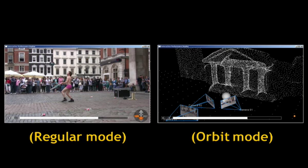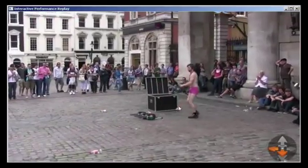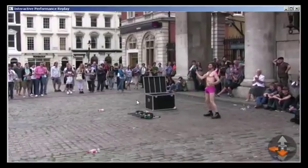The user interacts with the system in either regular or orbit mode. In both, the user has control over the same variety of final render options. Some of these options, like full resolution and audio transition effects, will only be apparent after the offline post-interaction part of rendering. The rest are visible at interactive rates, as shown here.